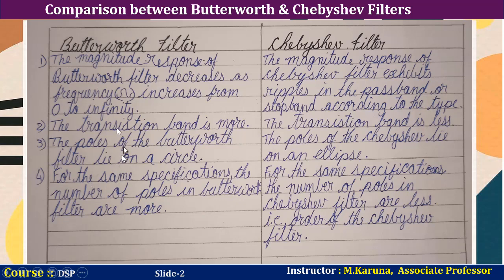Butterworth filter: the magnitude response of the Butterworth filter decreases as frequency increases from 0 to infinity. Coming to the Chebyshev filter: the magnitude response of the Chebyshev filter exhibits ripples in the pass band or stop band according to the type.